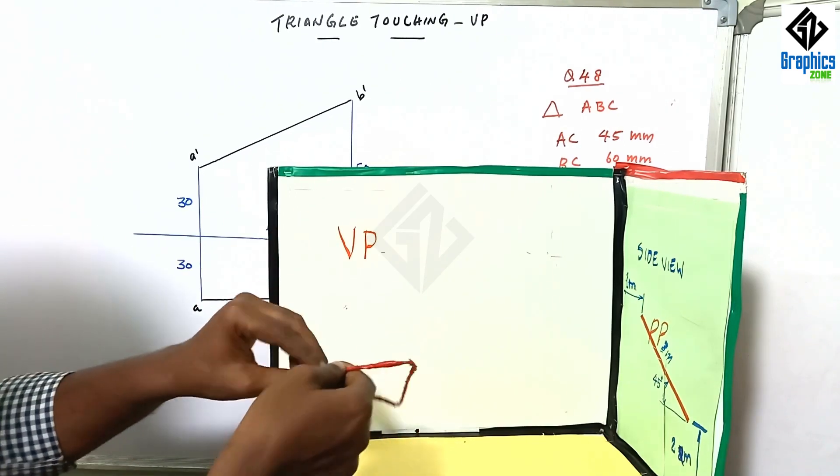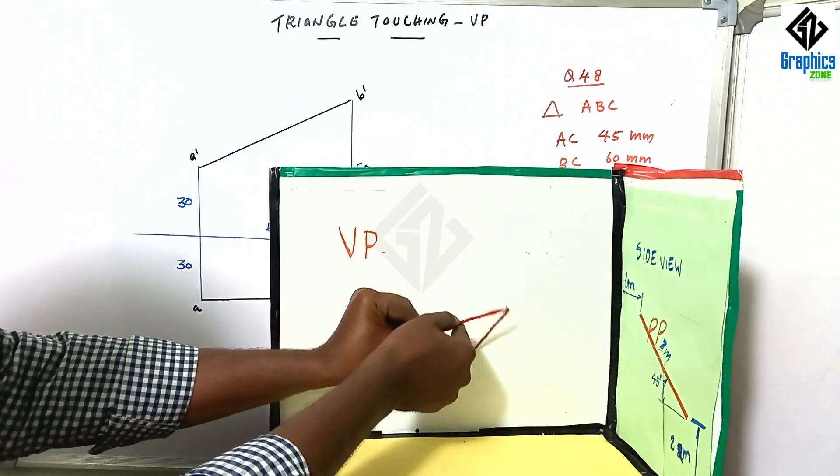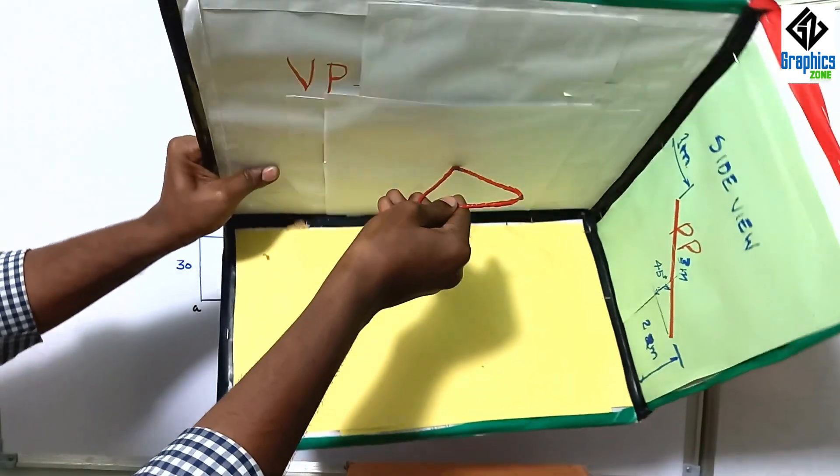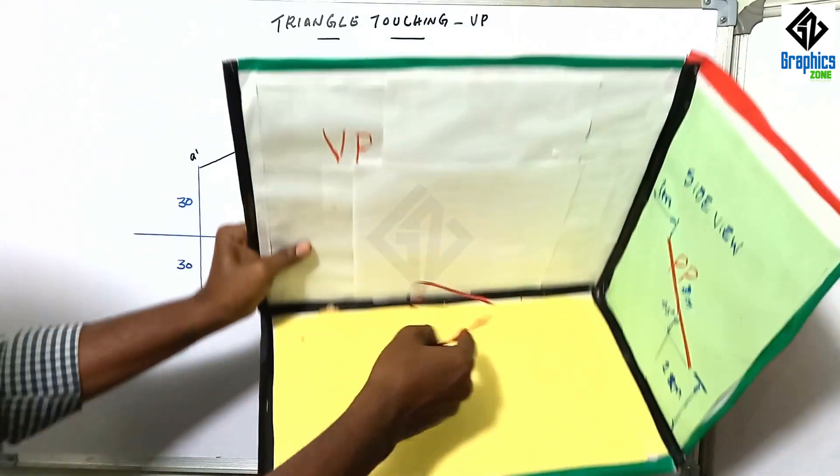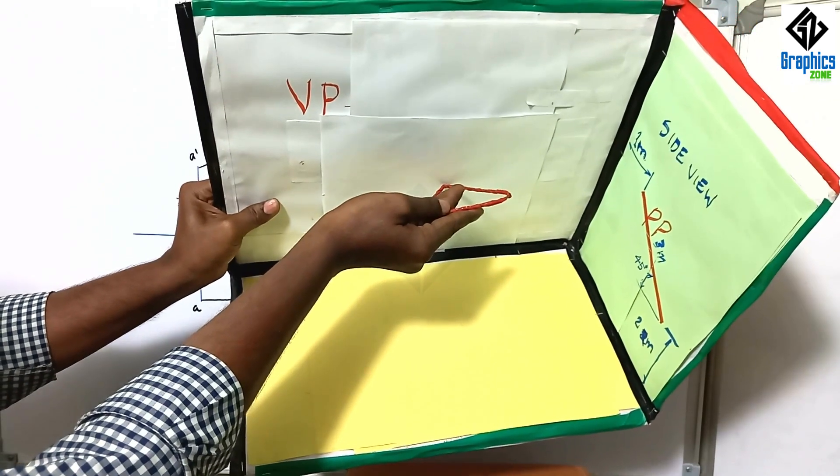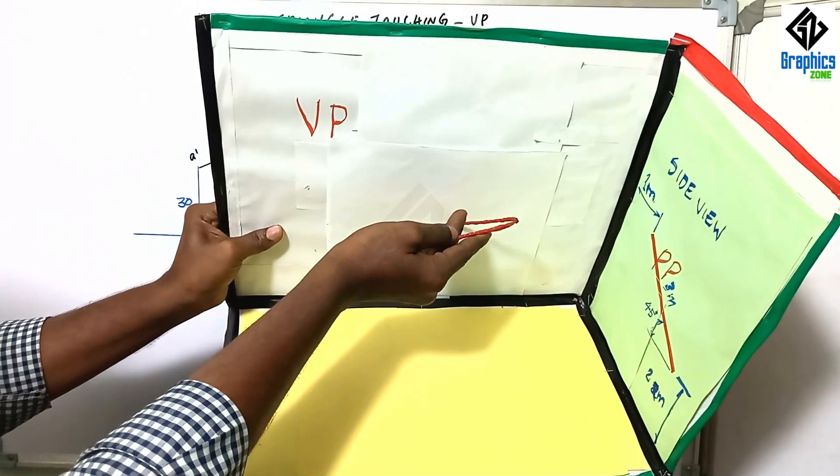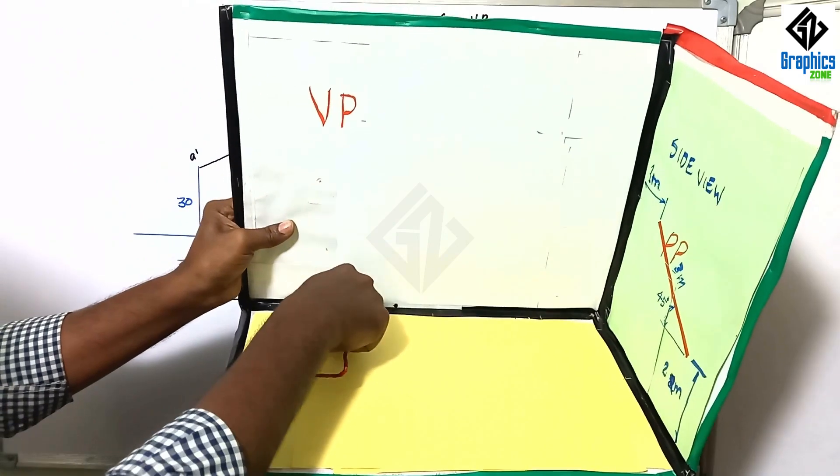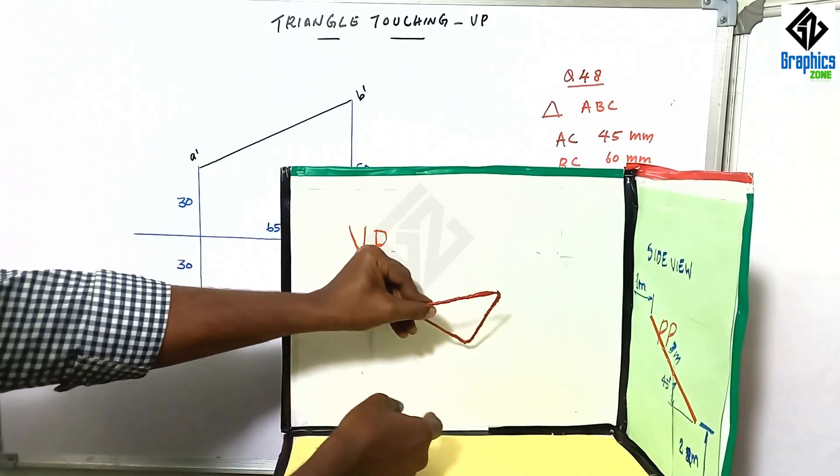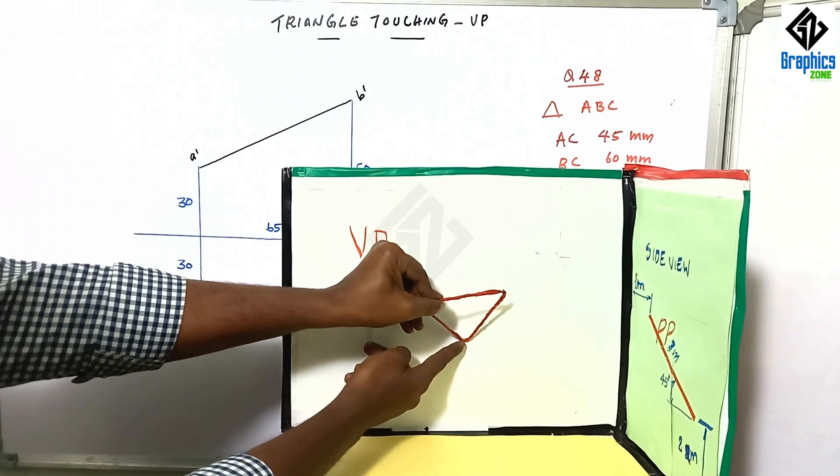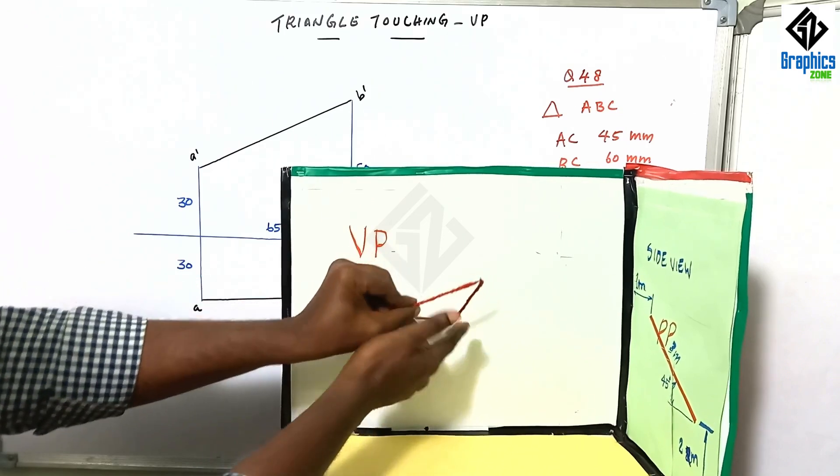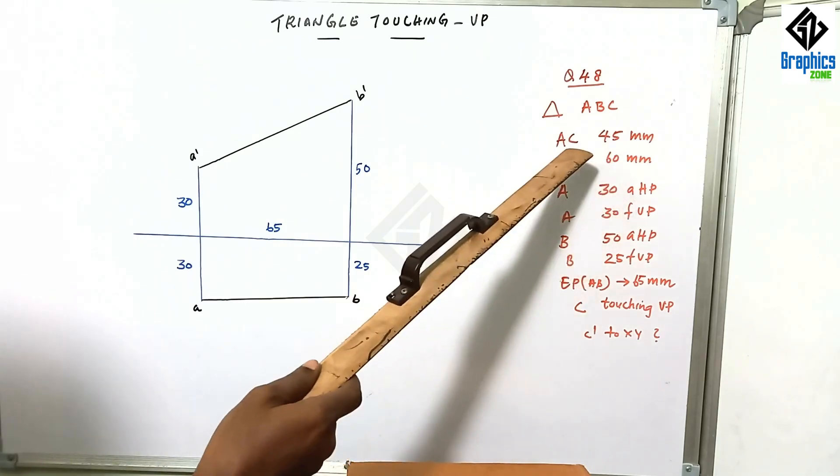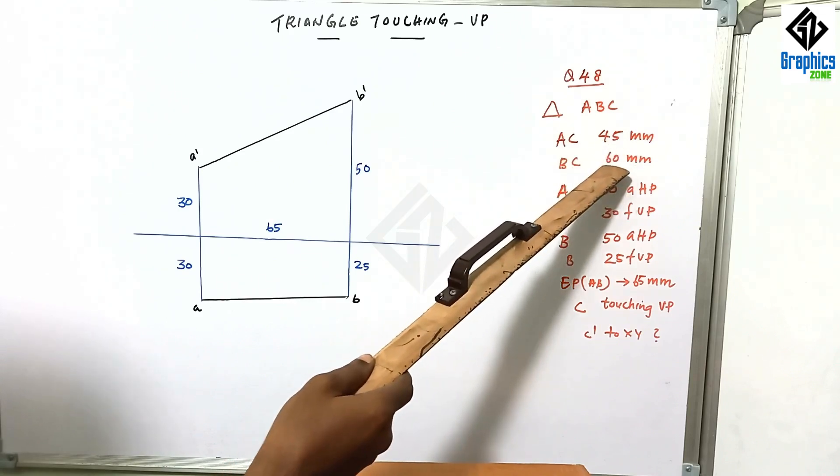There is a point C which is touching VP. Because either VP will touch here, C is touching VP. We can see top view, that is C small c will be lying on XY line. This is our logic: C is touching VP so that the top view C will be on XY line. We have to find out what is the distance from XY line to that point C.